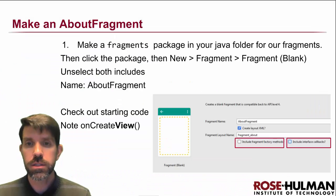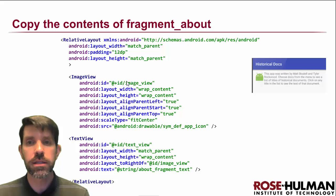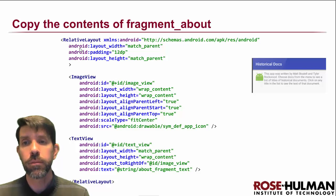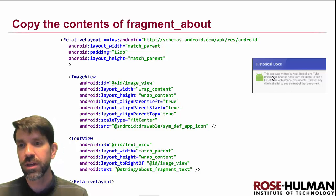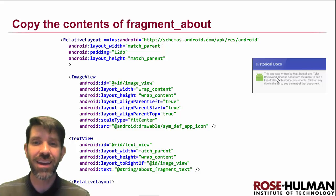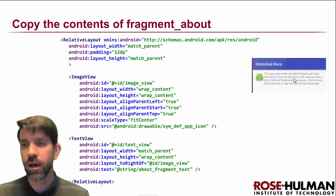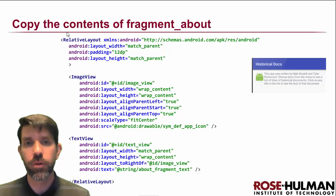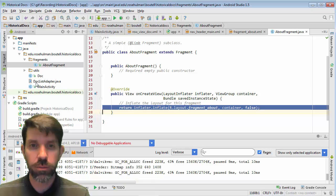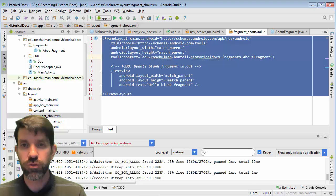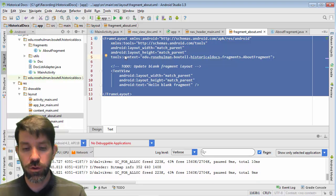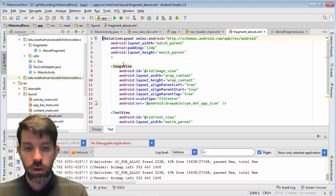Now go ahead and grab the contents of the fragment_about layout. It's just a RelativeLayout with a little ImageView to put an icon — if it were your app, you could put a mug shot of yourself and say who wrote it. Feel free to add yourself to the string. It also has a bit of instructions about how to use the app. Copy that onto your clipboard, go into fragment_about in your resources layout, and replace what's there. By default they give you a FrameLayout, and we'll talk about that in a bit.